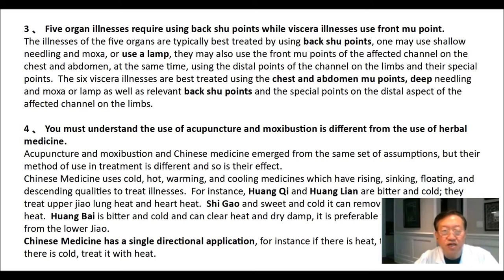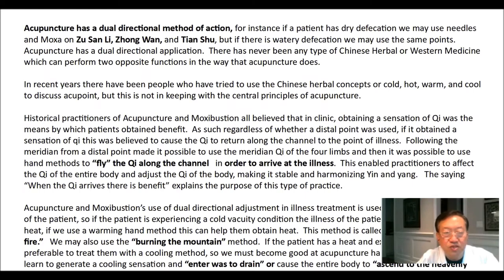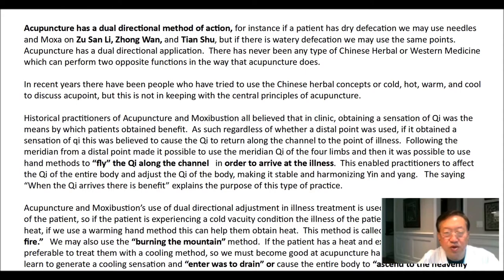For instance, Huangqi and Huanglian are bitter and cold and treat upper jiao lung heat and heart heat. Shigiao is sweet and cold and can remove middle jiao stomach heat. Huangbai is bitter and cold and clears heat and dry damp, preferable for clearing damp heat from the lower jiao. Chinese medicine has a single directional application: if there is heat, treat it with cold; if there is cold, treat it with heat. Acupuncture has a dual directional method of action. For instance, if a patient has dry defecation, we may use needles and moxa on zu san li, zhong wan, and tian shu. But if there is watery defecation, we may use the same points. There has never been any type of Chinese herbal or Western medicine which can perform two opposite functions in the way acupuncture does. In recent years, people have tried to use Chinese herbal concepts of cold, hot, warm, and cool to discuss acupoints, but this is not in keeping with the central principles of acupuncture.